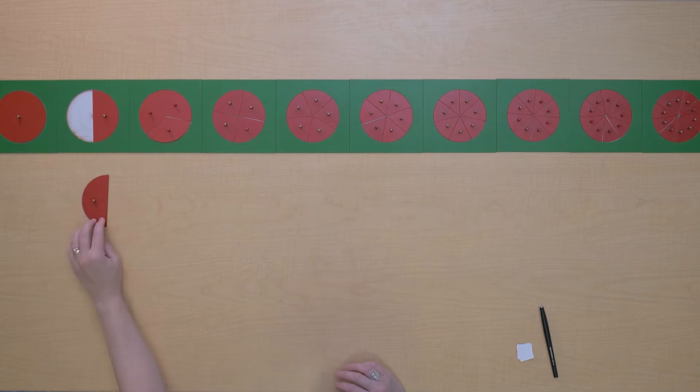Here I have one half and I'm wondering if I can fit any other pieces from another family into this space that one half takes up.